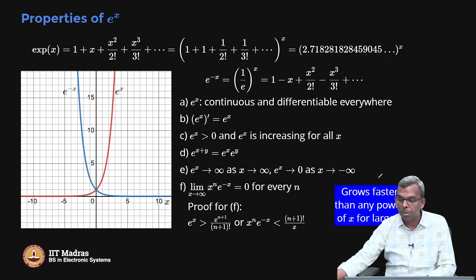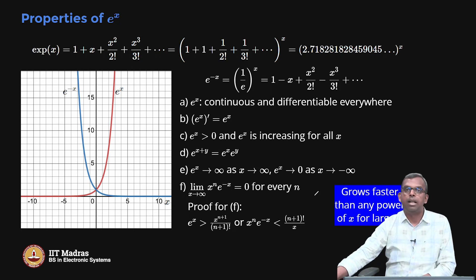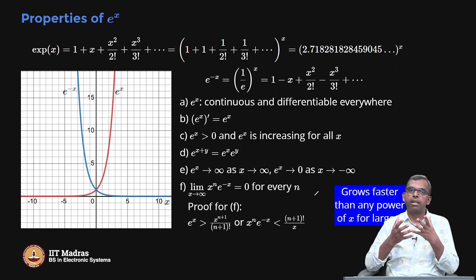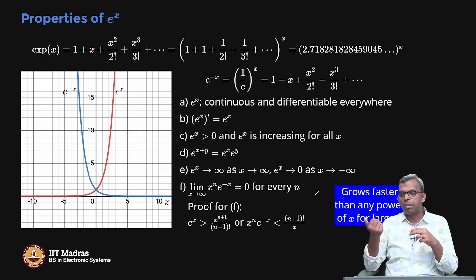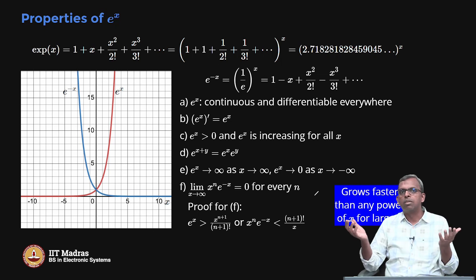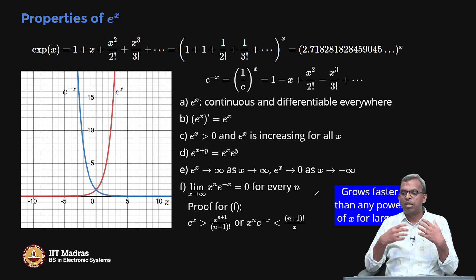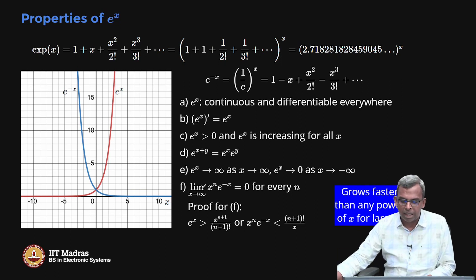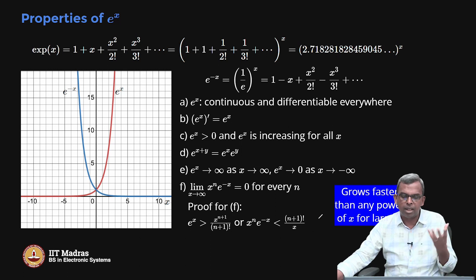So this is the power of this formula. E power x grows faster than any power of x for large x — any x power n is not as fast as e power x. One intuitive reason: x power n has derivatives n times x power (n minus 1), and eventually the derivatives run out, becoming smaller and smaller. E power x, on the other hand, has derivative e power x forever — the derivatives never run out. That is one reason why, intuitively, e power x becomes much, much faster than x power n for any fixed n. These properties are very, very crucial and are used all the time in understanding mathematical models in which the exponential function shows up.